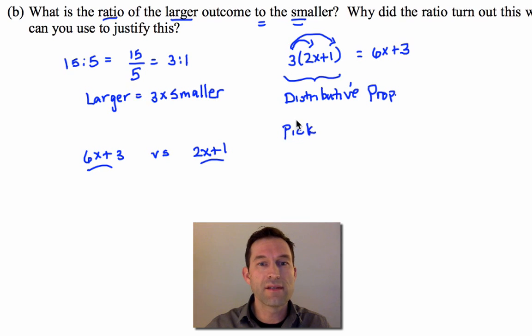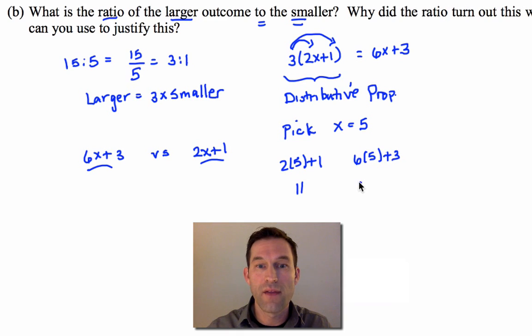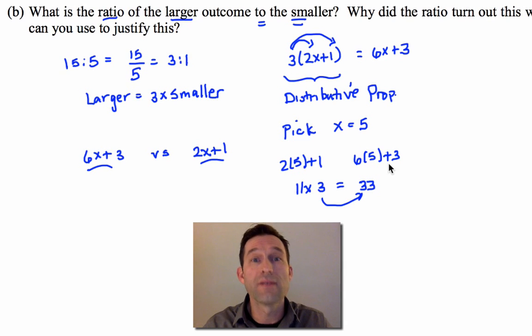Let's pick a different x. Let's say we picked x equals, I don't know, 5. 5 is kind of a nice number to work with. If we put it into 2x+1, we'd get 2 times 5, which is 10, plus 1, and it's 11. If we put it into our 6x+3, we'd get 6 times 5, plus... oops, not plus 1. That's a mistake. I'd get 6x+3, and that would be 30 plus 3, or 33. And notice that 33 is 11 times 3. So, no matter what value of x we picked, 6x+3 will always give us 3 times the value of 2x+1. And we should be able to see that by thinking about the distributive property.